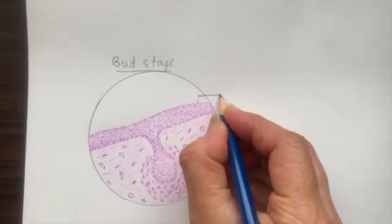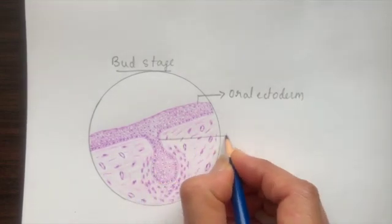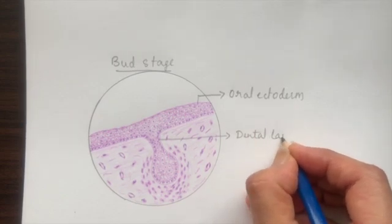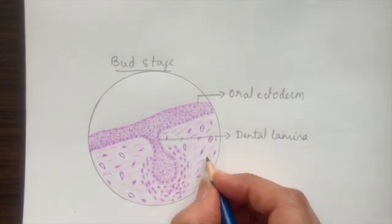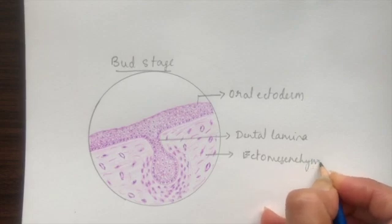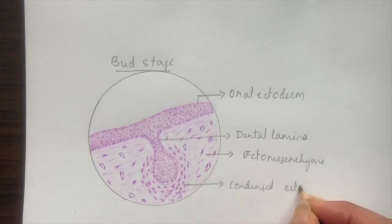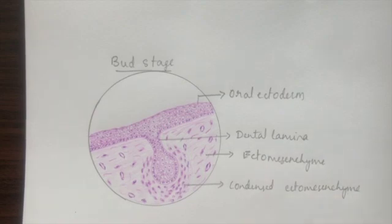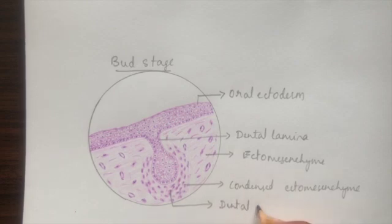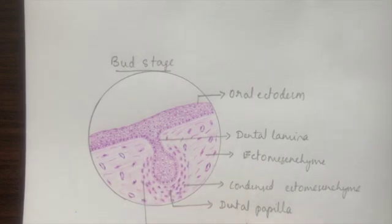We will start labeling: this is the oral ectoderm, this is the dental lamina, this is the ectomesenchymal condensation or condensed ectomesenchyme. This group of cells close to the bud will be the dental papilla cells. All around will be dental follicle cells, also called dental sac cells.